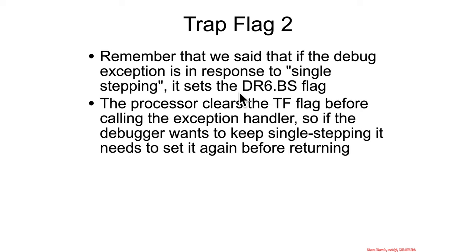As a reminder, back when we were talking about debug register 6 — the status register — the BS bit indicates that an exception occurred because of single-stepping. So that bit tells the debugger: 'I'm catching this exception, BS is set, therefore this must have single-stepped.' It's also worth knowing that the trap flag will be automatically cleared when the debug exception is fired.